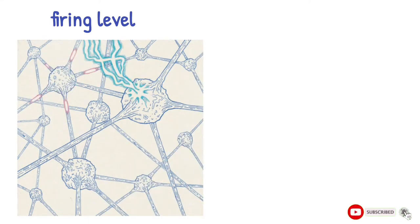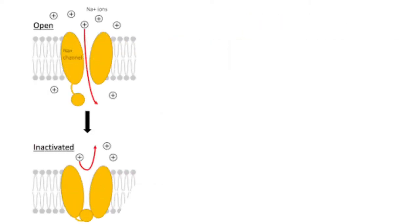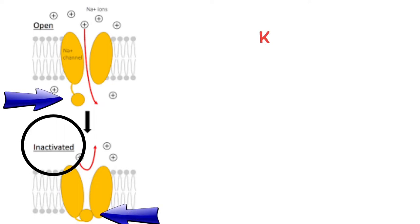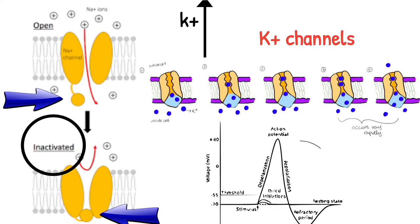When the firing level is reached, the influx of Na+ is very great and it leads to overshoot. But the Na+ transport is short lived because of rapid inactivation of Na+ channels. Thus, the Na+ channels open and close quickly. At the same time, the K+ channels start opening. This leads to efflux of K+ out of the cell, causing repolarization.